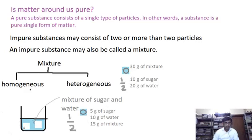So if we go on taking such samples from this mixture and analyzing them, we shall always find that whatever be the mass of the sample, the ratio between the mass of sugar and mass of water in that sample will always be 1 by 2. These samples may be collected from any part of this mixture. Such a mixture in which every part has components in the same ratio is called a homogeneous mixture.